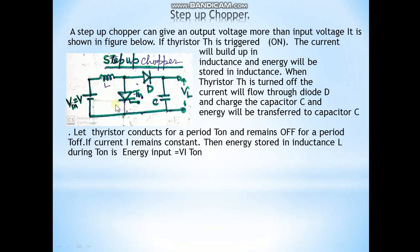When the thyristor is on, the inductor charges through that path and stores energy. During the off-time of the thyristor, the inductor discharges through the diode, charges capacitor C, and supplies the load voltage. The current builds up in the inductance and energy is stored in it.